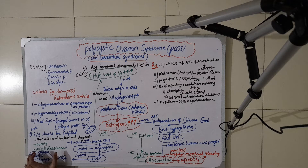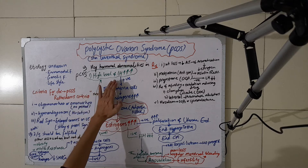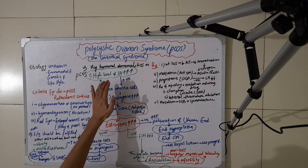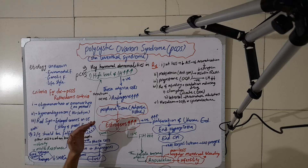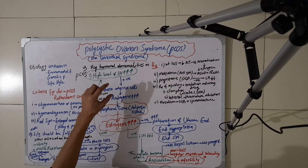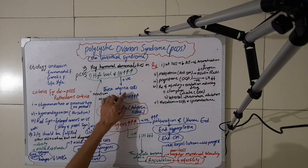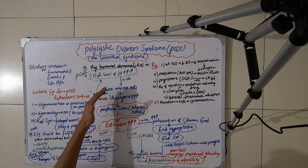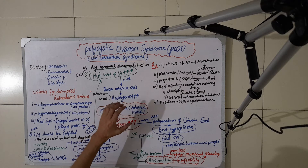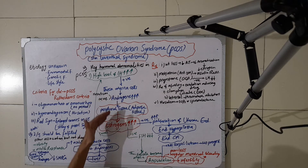The key hormonal abnormality in PCOS is a high level of luteinizing hormone (LH). It is actually an imbalance between LH and FSH. A high level of LH gives positive stimulation to the theca interna cells, and these theca interna cells produce androgens. These androgens are transported to peripheral tissue — mainly adipose tissue — where, by the action of the aromatase enzyme, they are converted into estrogens.